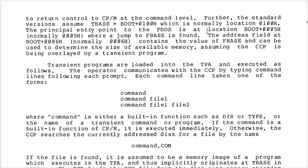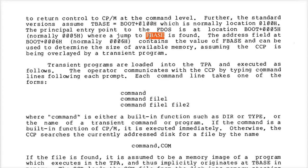Whenever you want to invoke a service from the operating system, you call boot plus 5, which is simply address 5. At that address there will be a single jump instruction that goes to where the FBase begins — because you and I put it there when we wrote the BIOS. That's how it gets there.